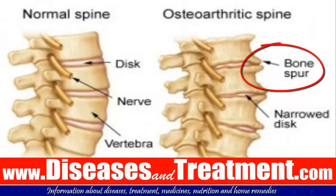Osteophytes tend to form when joints have been affected by arthritis. Osteoarthritis damages the cartilage, which is the tough, white, flexible tissue that lines the bones and allows the joints to move easily. Osteoarthritis mostly occurs in the knees, hips, spine, small joints of the hands, and the base of the big toe. As joints become increasingly damaged, new bone may form around the joints — these growths are called osteophytes. They can also form in the spine as a result of ankylosing spondylitis, a type of arthritis that specifically affects the spine.